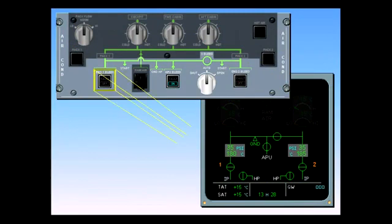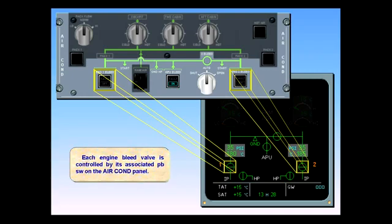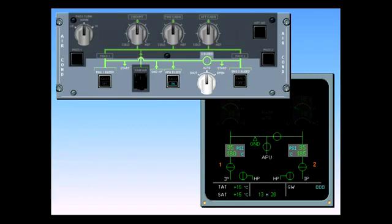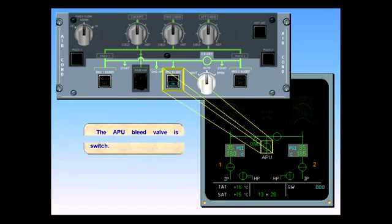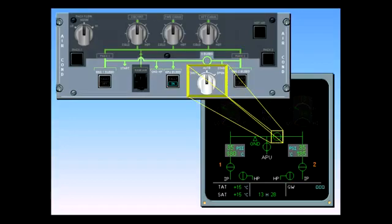Each engine bleed valve is controlled by its associated push-button switch on the air conditioning panel. The APU bleed valve is controlled by its associated switch. The cross-bleed selector enables the pilot to open and close the cross-bleed valve manually or to let the system operate the cross-bleed valve automatically.